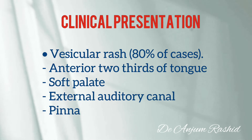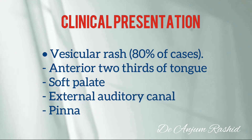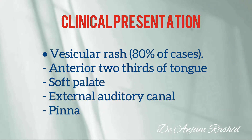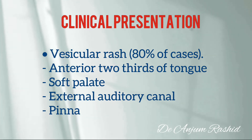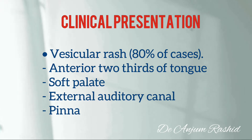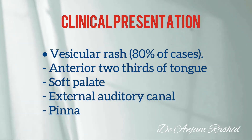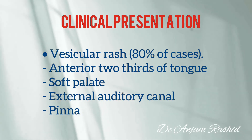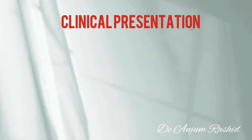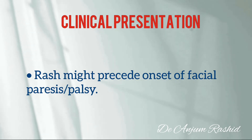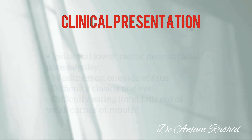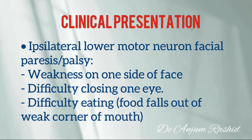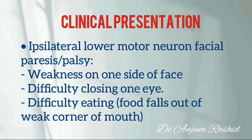Classic Ramsay Hunt Syndrome can be associated with a vesicular rash of the ear or mouth in 80 percent of cases. The location of the rash varies from patient to patient, as does the area innervated by the nervus intermedius. It may include the anterior two-thirds of the tongue, soft palate, external auditory canal, or pinna. The rash might precede the onset of facial palsy.